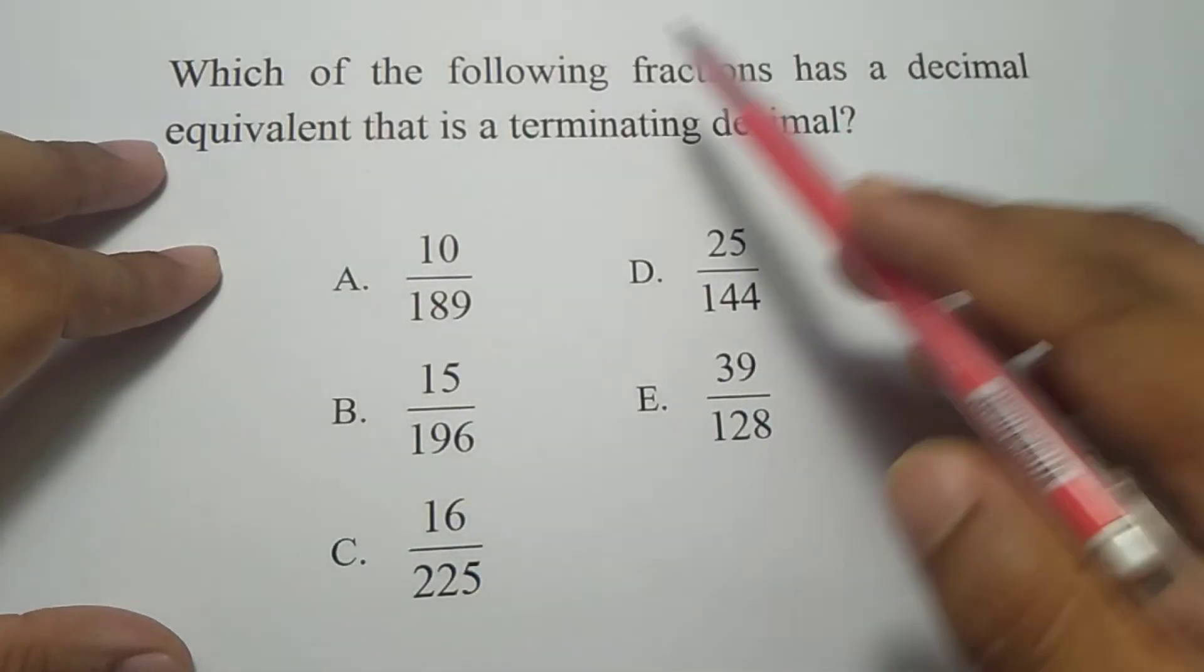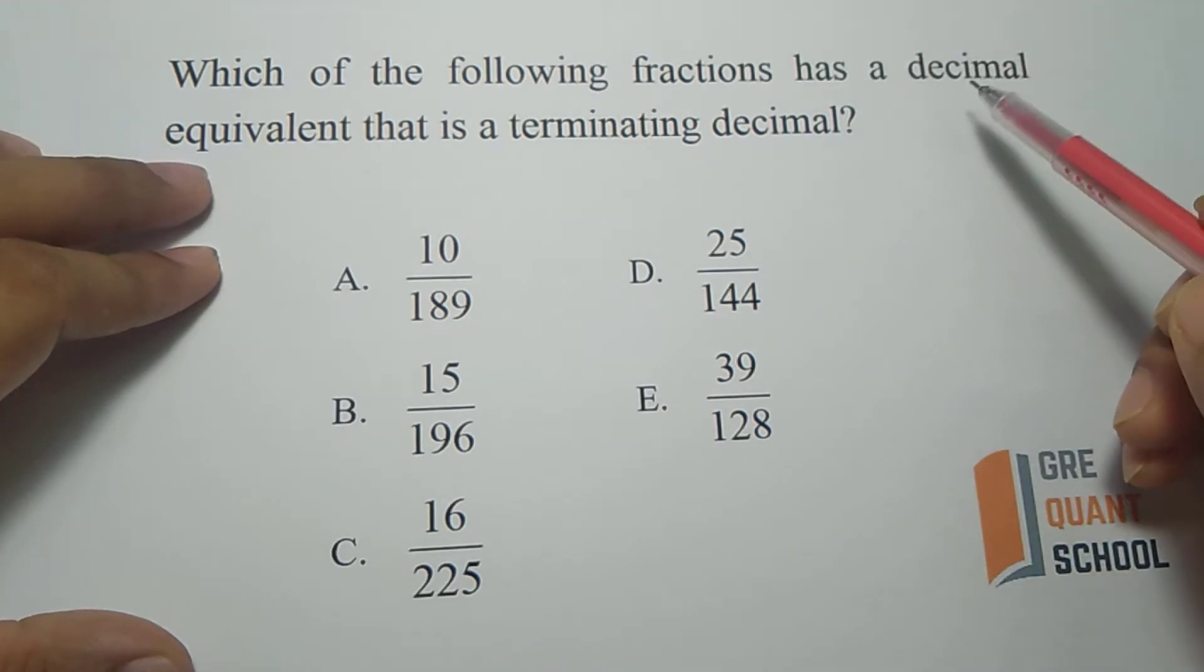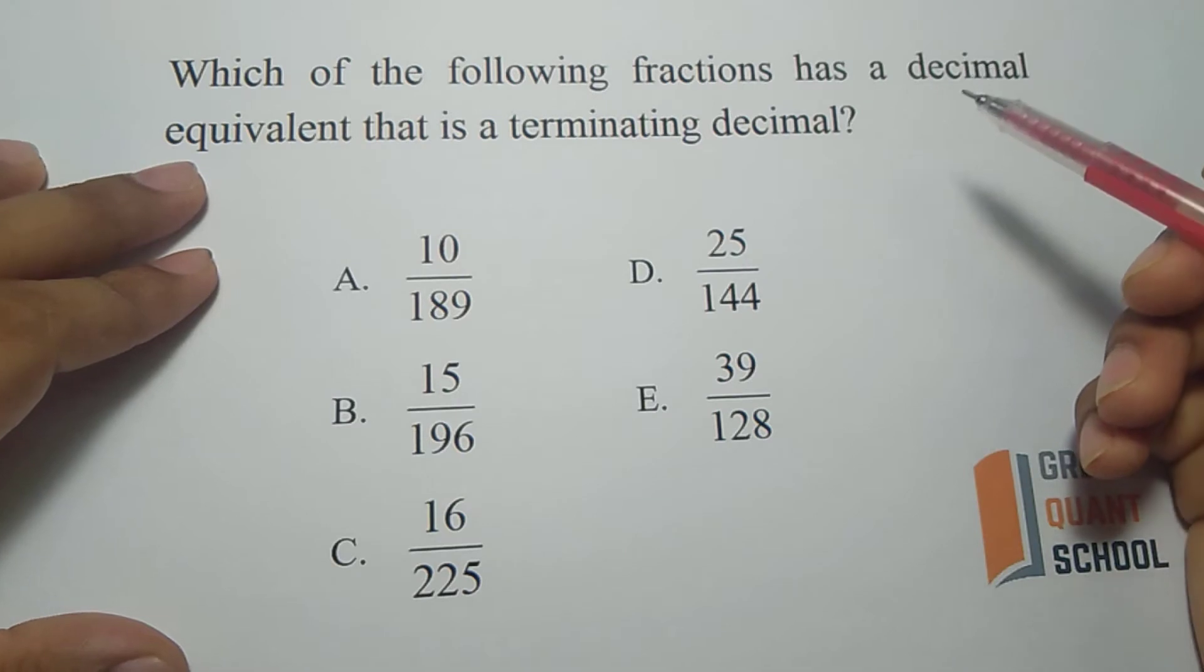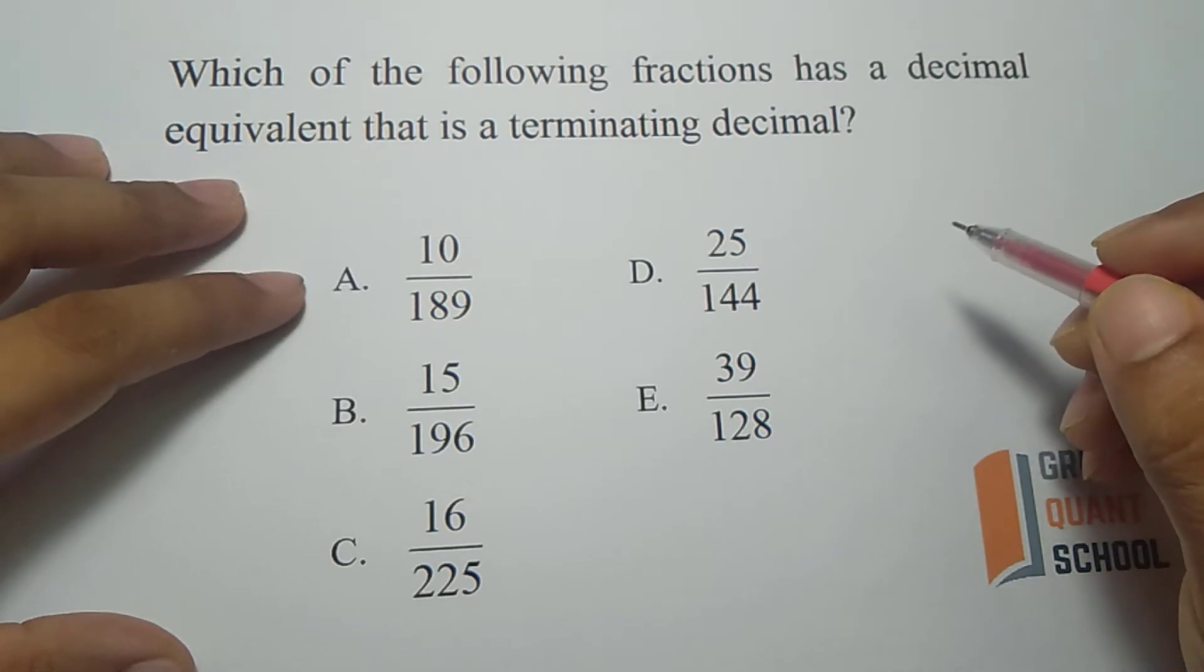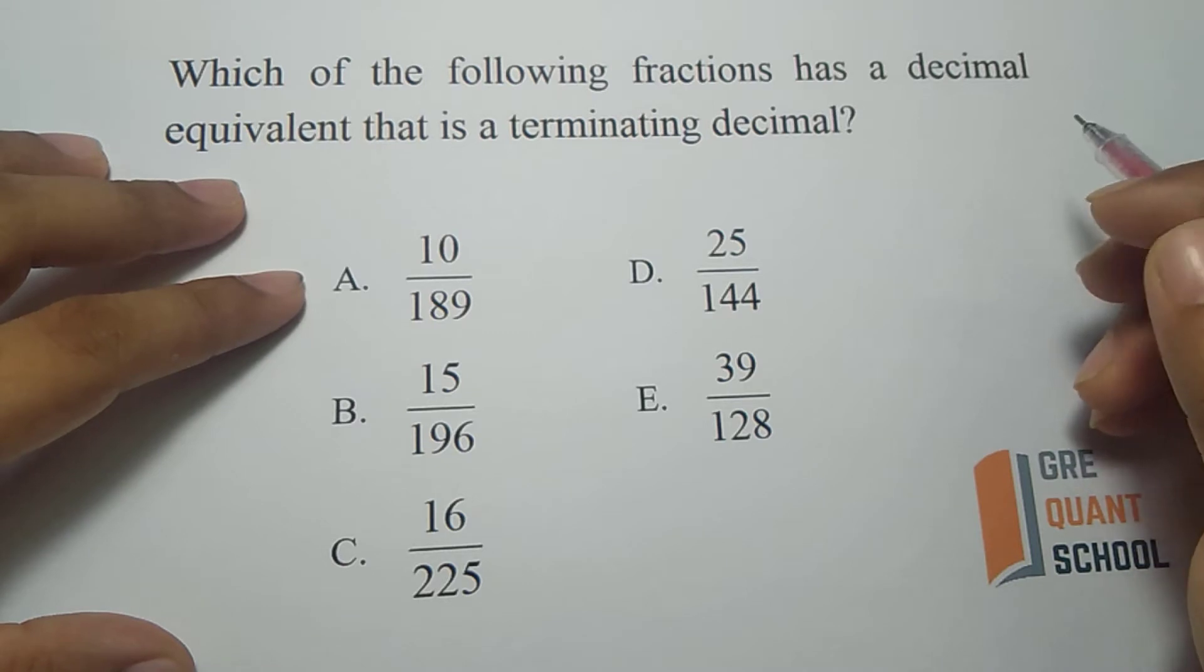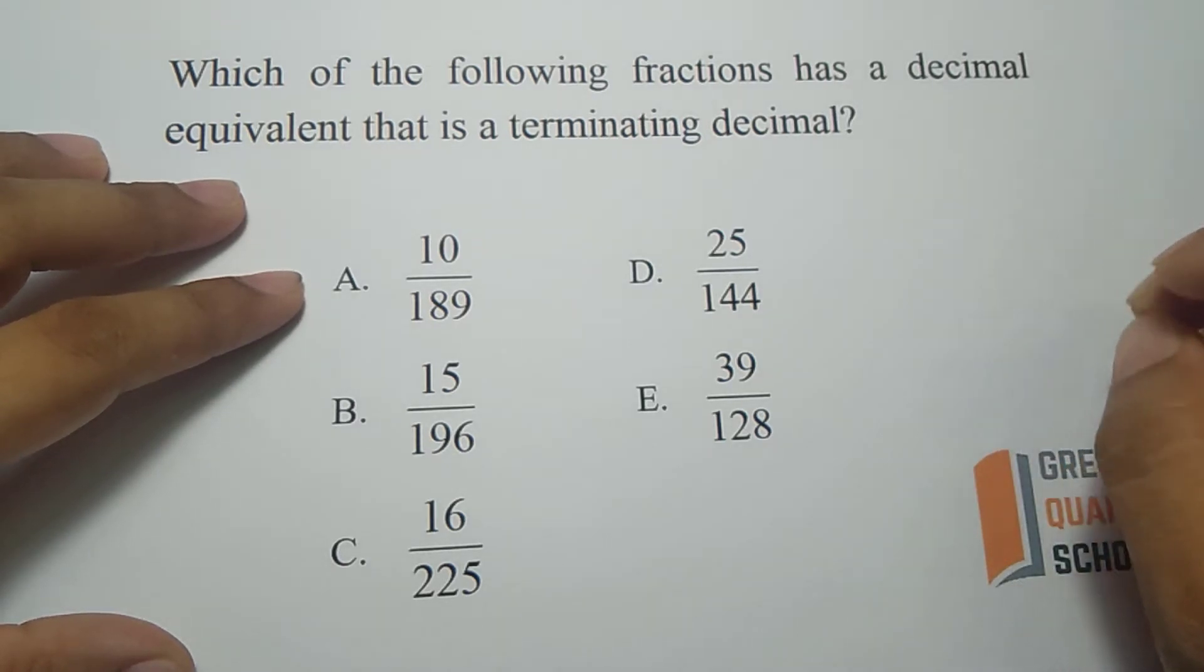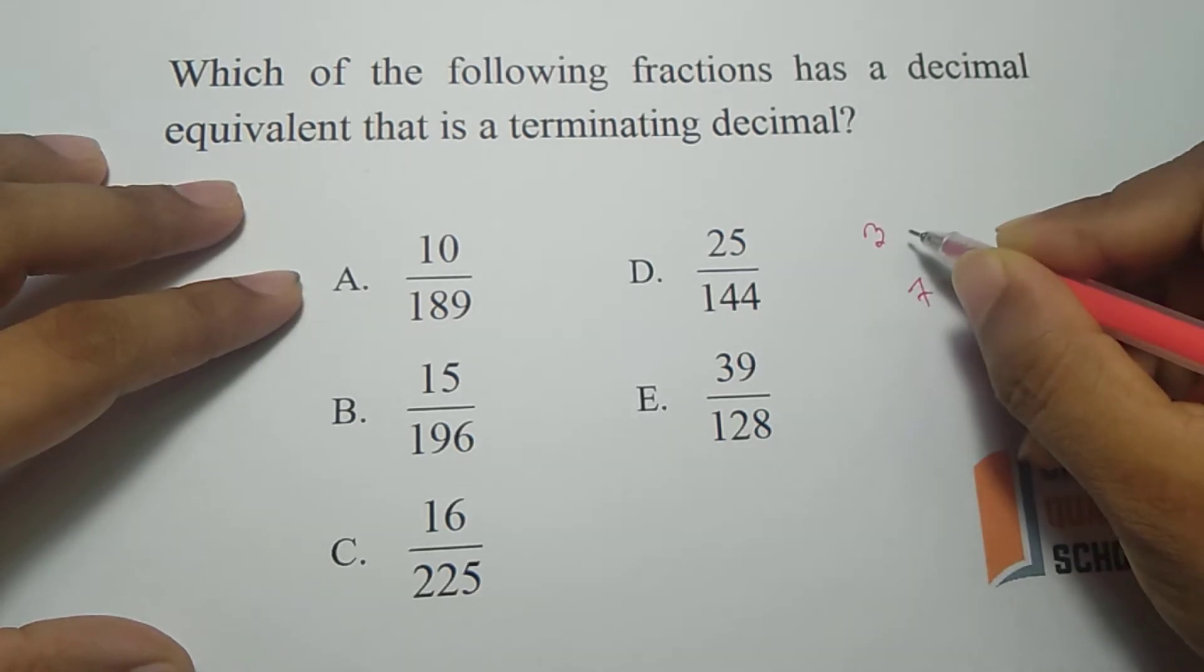The question is which of the following fractions has a decimal equivalent that is a terminating decimal. For this question we need to know which numbers make a fraction non-terminating. We know only 3 and 7 and their multiples make a fraction non-terminating.